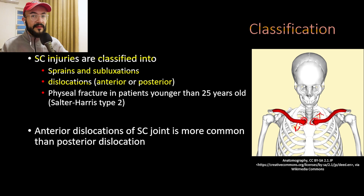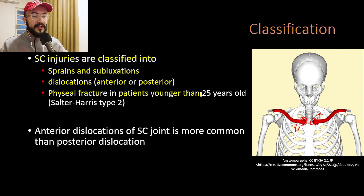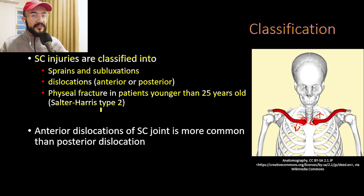In dislocations, the ligaments and joint capsule of the SC joint have sustained a complete injury. SC joint injury is also classified into physeal fracture in patients younger than 25 years old, where the growth plate has not yet ossified. These patients might get a physeal fracture affecting their growth plate, and it is mostly a Salter-Harris type 2 fracture. Anterior dislocation of the SC joint is more common than posterior dislocation.